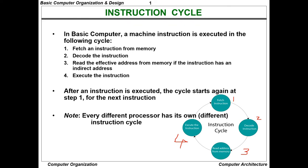So the instruction cycle contains four steps: fetch an instruction from memory, decode the instruction, read the effective address from memory if it is an indirect address, and execute the instruction and store the result in memory. After an instruction is executed, the cycle starts again at step one for the next instruction. Every processor has its own different instruction cycle.